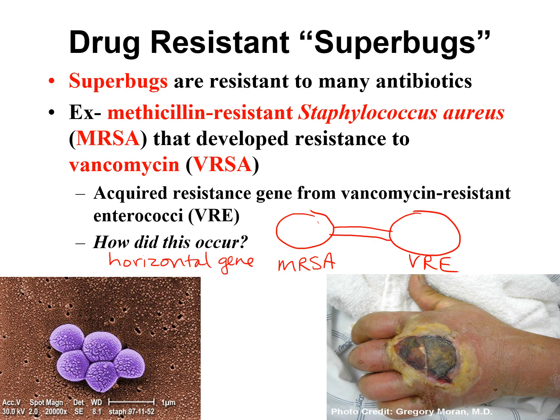The horizontal gene transfer was done via conjugation using the sex pilus — a small protein tube. The VRE bacteria had a gene conferring vancomycin resistance, and they passed a copy of that gene over to the MRSA bacteria. That's how MRSA became VRSA — a highly resistant Staph aureus that is now very difficult to treat, including with vancomycin, which we previously used to treat MRSA.